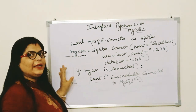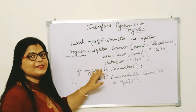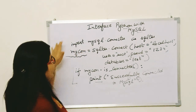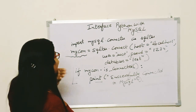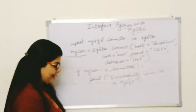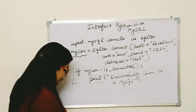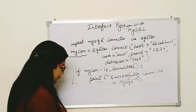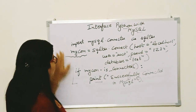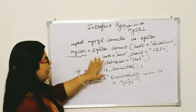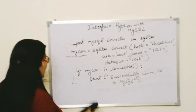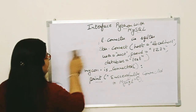So before doing any programming, you should first check with this command that Python is connected with MySQL or not. Hopefully you understand this. If there is any problem so far, you can write in the comments and we'll discuss. Till here, we are connected with MySQL with the username and password. Now what is the fourth step?